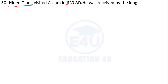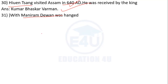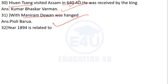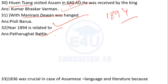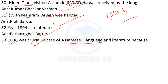Xuanzang visited Assam in 640 AD. Who received him? Kumar Bhaskar Varman received him. Moniram Dewan was hanged — when was he hanged? The answer is Pioli Barua was hanged, connected to Patharu Ghat Battle in 1836. The Patharughat battle occurred in 1894.